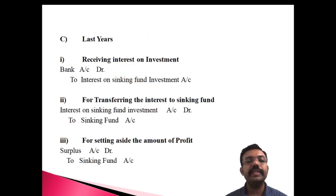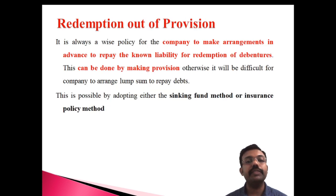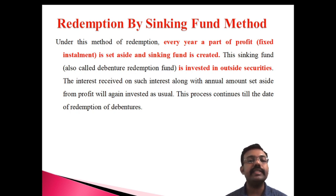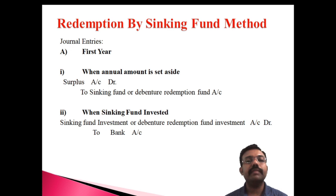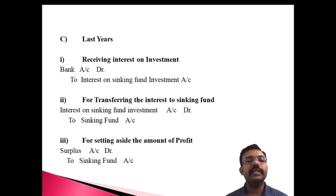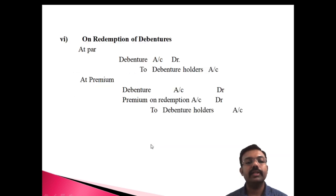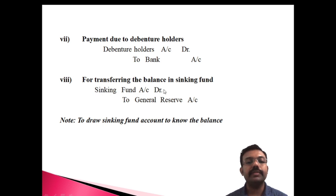Let me conclude. We discussed what is the sinking fund redemption under the provision. The companies are arranging the provision to meet their liability, and this is known as redemption out of the provision. There are two important methods: the sinking fund and the insurance policy method. We discussed the sinking fund method — every year the sinking fund is created and this fund is invested in outside securities to earn interest, which is used for the redemption of the debentures. The entries are categorized into first year, second and subsequent years, and the last year. An important element is identifying the profit and loss by drawing the Sinking Fund Investment Account, and transferring the balance of the Sinking Fund Account to General Reserve. Thank you so much for watching.